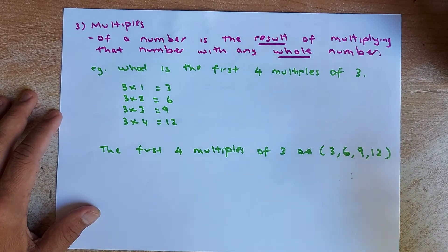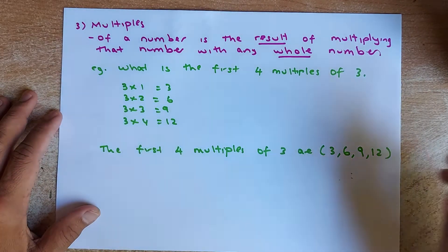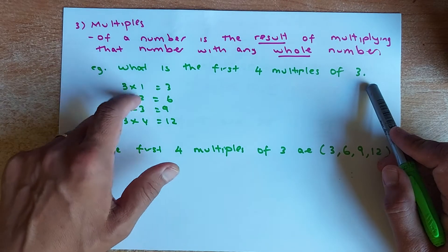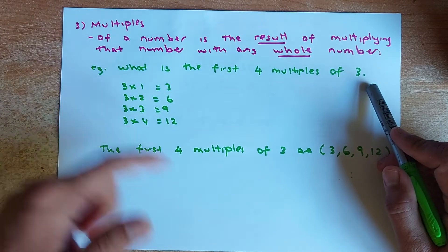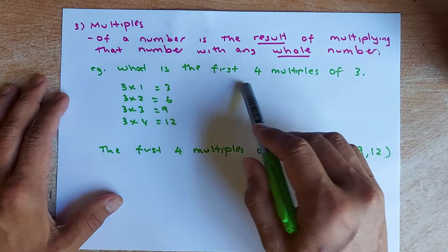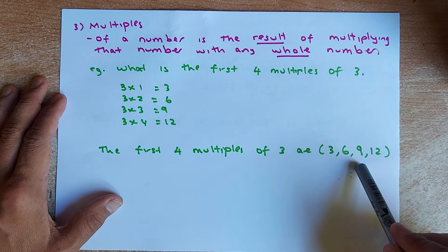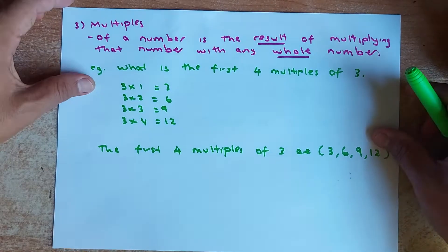So for example, if the question asks you what is the first 4 multiples of 3, you multiply 3 by 1 is 3, 3 by 2 gives you 6, and so forth. So the first 4 multiples of 3 going to be 3, 6, 9, and 12. That's simple, isn't it?